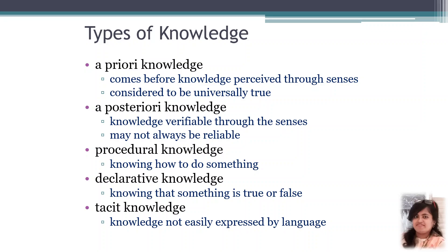Another type of segregation is procedural knowledge and declarative knowledge. Procedural knowledge — from the word procedure — is knowing how to do something: the steps that need to be done. Declarative knowledge — from the word declaration — is knowing that something is true or false. Another type of knowledge is tacit knowledge — knowledge not easily expressed by language. You may have certain knowledge but are not able to express it through language properly or easily. These are the different kinds of types of knowledge.